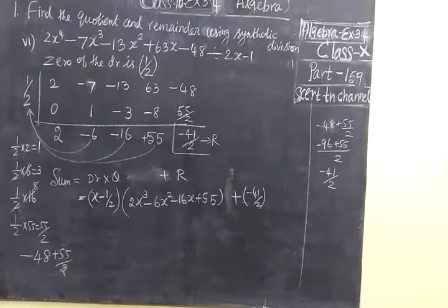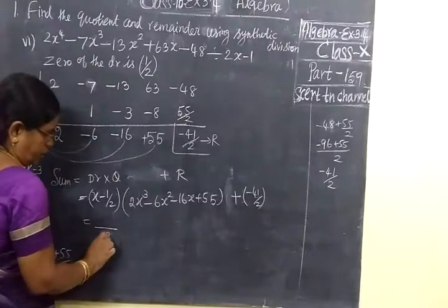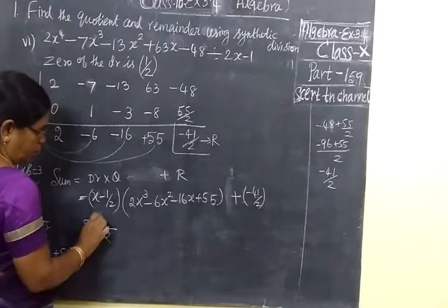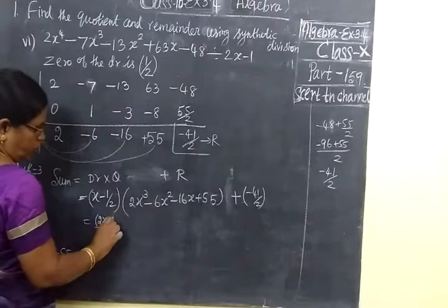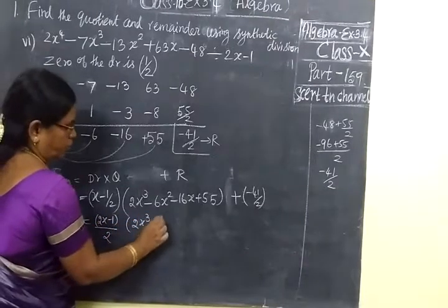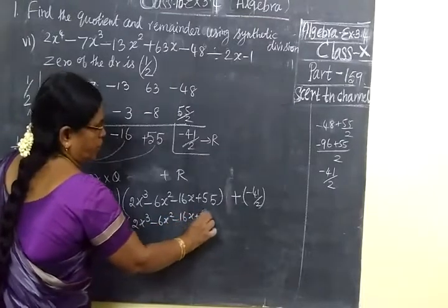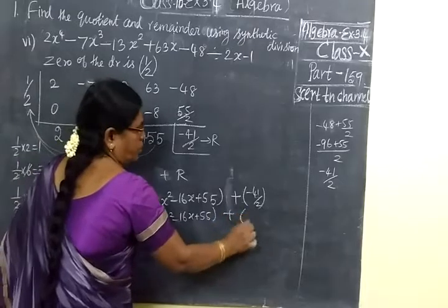1 minus 6, then minus 16, then 55 minus 41/2. Now here is here, this is 2, we cross multiply: 2x minus 1. Here we write 2x^4 minus 6x^3 minus 16x plus 55 plus remainder minus 41/2.